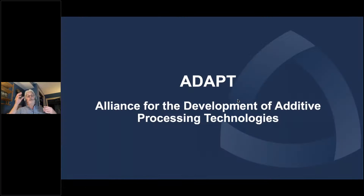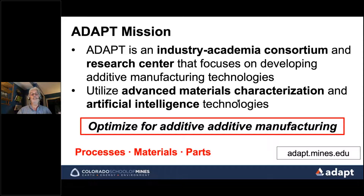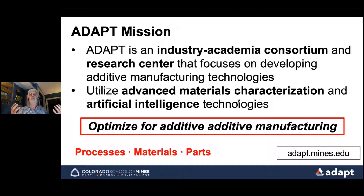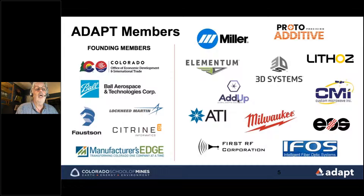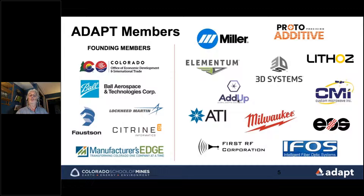ADAPT stands for the Alliance for the Development of Additive Processing Technologies, based at the Colorado School of Mines. It's an industry-academic consortium and research center focused on developing additive manufacturing technologies. We utilize the skillset at Colorado School of Mines, which is really focused on advanced materials characterization and artificial intelligence technologies to optimize for additive manufacturing. The center was formed about four or five years ago from a grant from the State of Colorado.